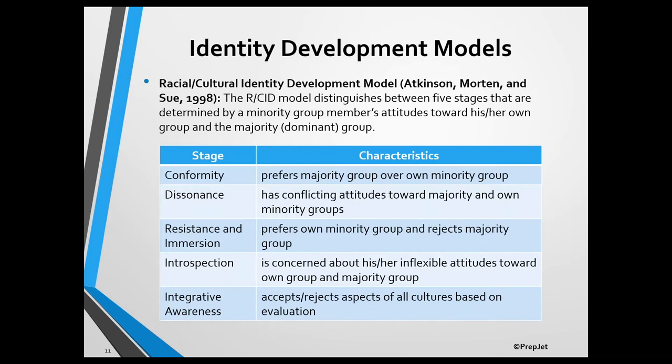People in the resistance and immersion stage have positive attitudes toward members of their own minority group and negative attitudes toward members of the majority group. They're unlikely to seek therapy because of their suspiciousness of mental health services. When they do seek therapy, they're likely to attribute their psychological problems to racism and they prefer a therapist from their own minority group.